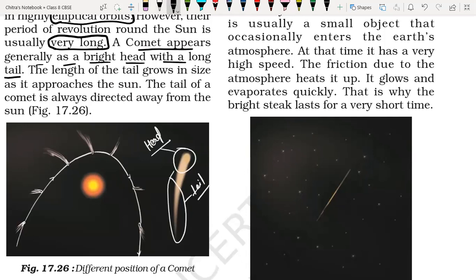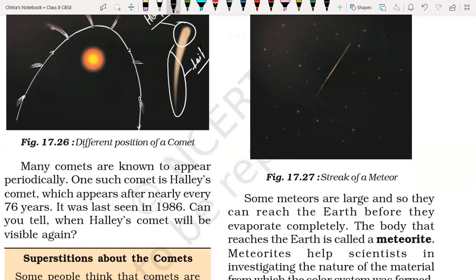The length of the tail grows in size as the comet approaches the sun — the tail appears very long when it approaches the sun. The tail of the comet is always directed away from the sun. Do remember this important point. Many comets are known to appear periodically. One such comet is called Halley's Comet, which appears after nearly every 76 years.